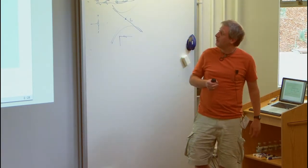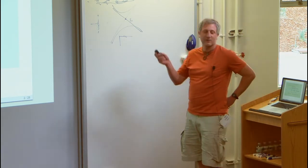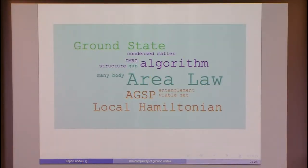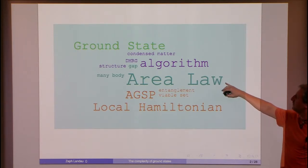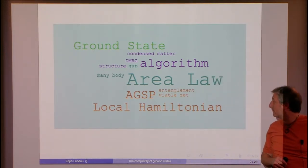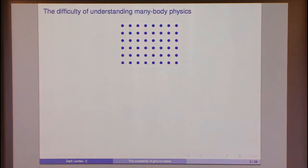The goal is to have a better sense of these words and how they fit together by the end of this hour. I'm going to be talking about things Daniel talked about just a little bit ago: the ground states of local Hamiltonians and understanding them. I'll talk a little bit about 1D area laws and a recent algorithm for finding ground states of 1D gapped systems. The notion of an AGSP — approximate ground state projection — is emerging as a really exciting new tool.